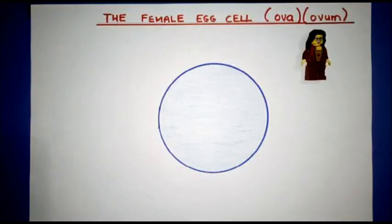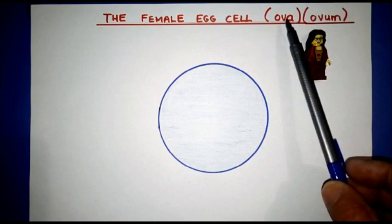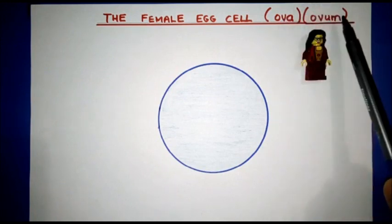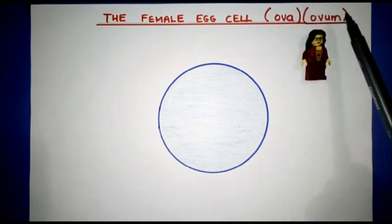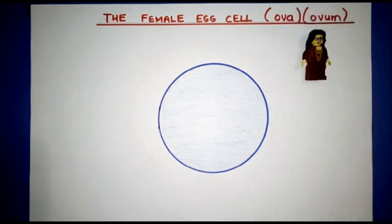Okay girls, here we go with the female egg cell, commonly called the ova or the ovum. Something quite interesting here - ova means more than one, ovum means one. So if I produce one egg, I'm producing an ovum. More than one, I produce ova.